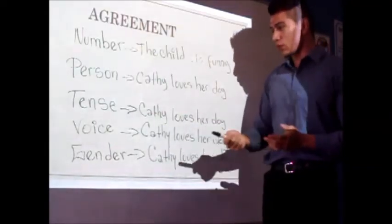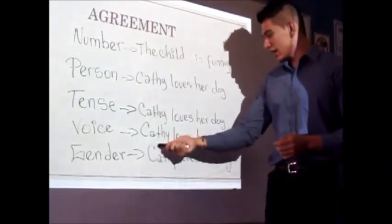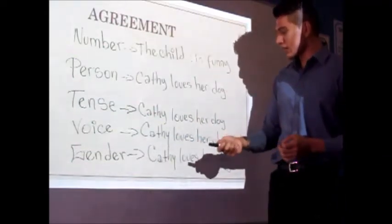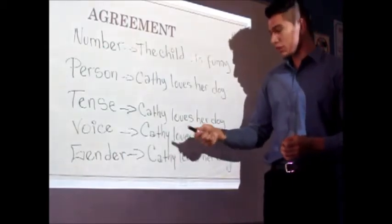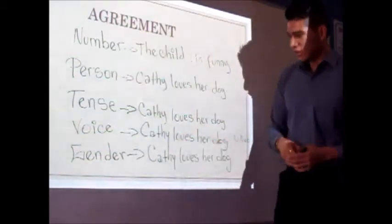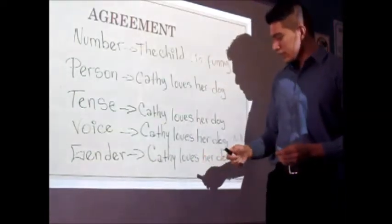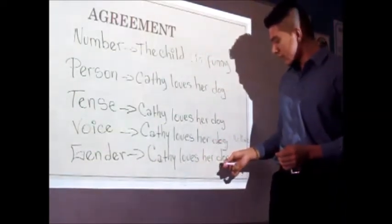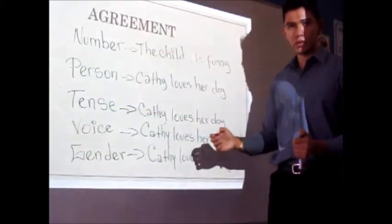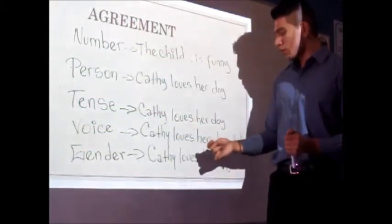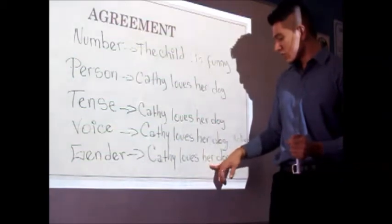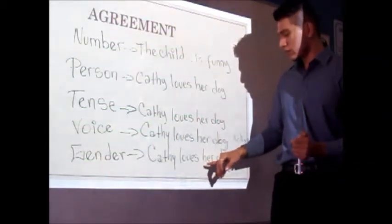For voice, 'Caddy loves her dough' is in the active voice. In passive voice, it becomes 'Caddy is loved by her dough,' because Caddy is the one performing the action. For gender, we use 'her' to refer to the dough as a female pronoun, or 'his' as a male pronoun — these are personal pronouns.